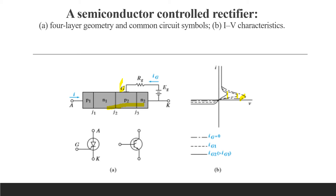Here we have triggered the electrons in N2, which initiates transistor action in the NPN. After a transit time tau, the electrons injected by junction J3 arrive at the center junction and are swept into N1, the base of the PNP transistor P1-N1-P2.